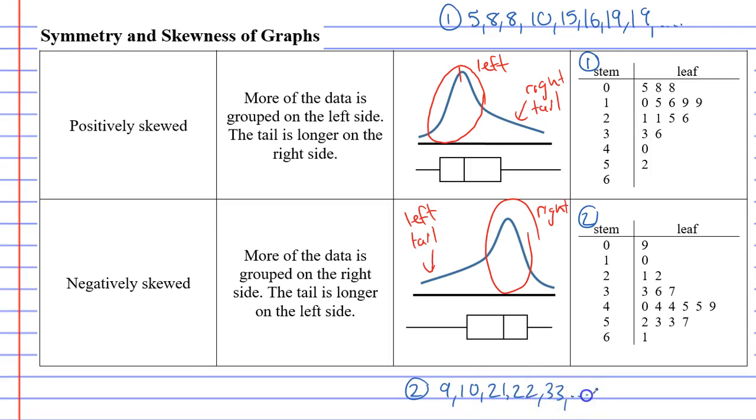What you'll notice with the first stem and leaf plot, most of the data are smaller numbers, such as your 10s and 20s. While in stem and leaf plot 2, most of your data are the bigger numbers, like your 40s and your 50s. So if something is positively skewed, it's skewed more in the direction of the smaller numbers. Things that are negatively skewed are skewed more towards the bigger numbers.